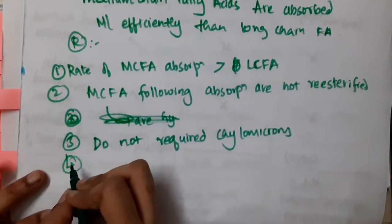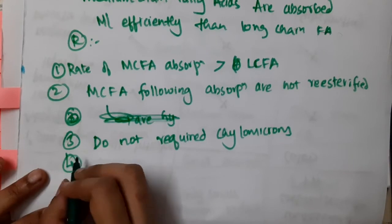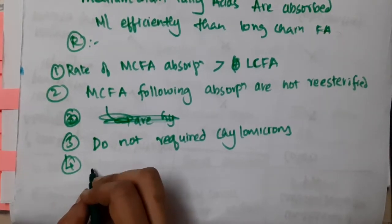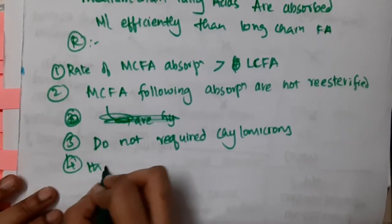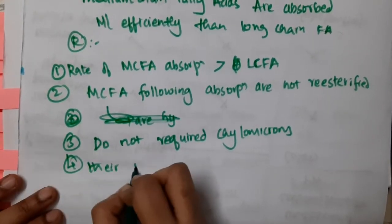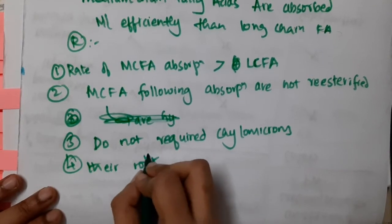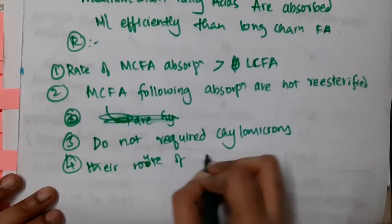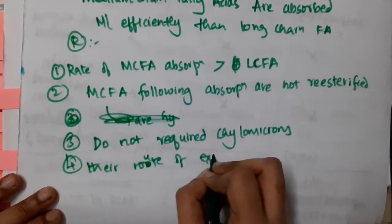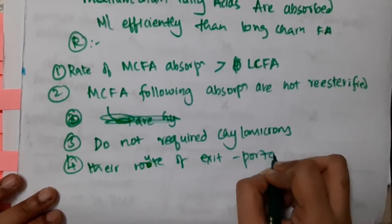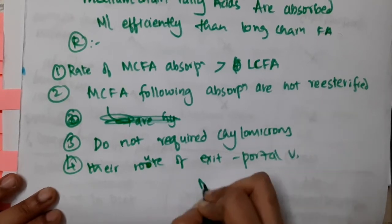And number four, their route of exit is via the portal vein, not the lymphatics. These are the reasons why medium chain fatty acids are absorbed more efficiently.